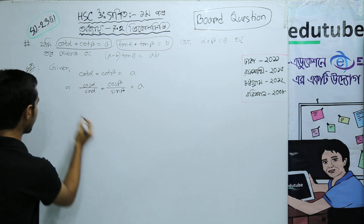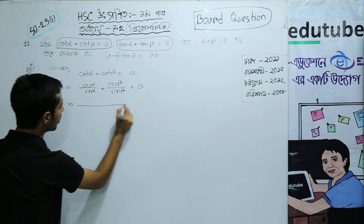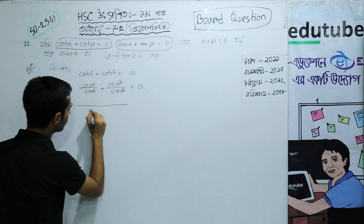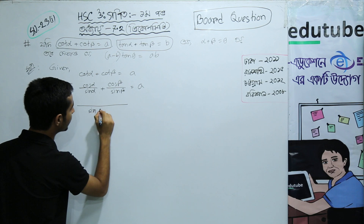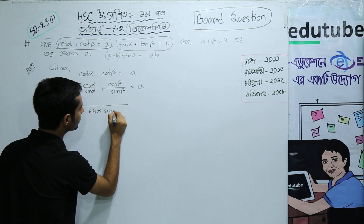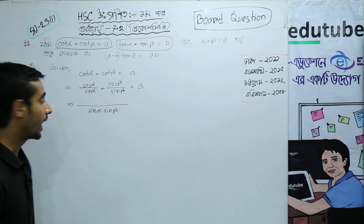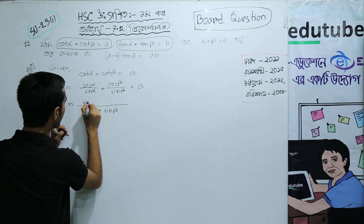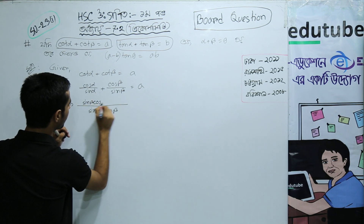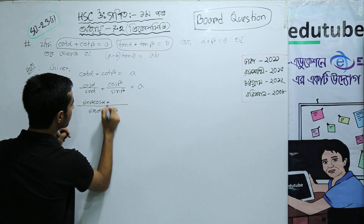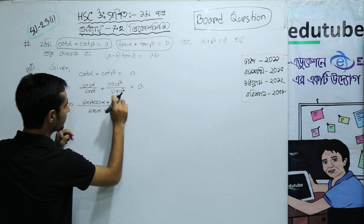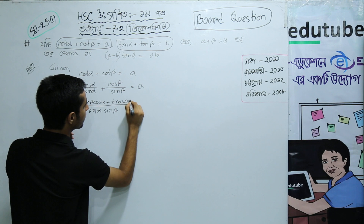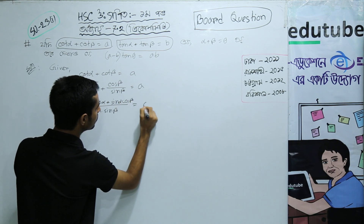So let's write the question. We get sin β·cos α plus sin α·cos β, all over sin α·sin β, equals A.